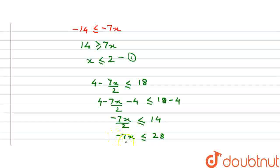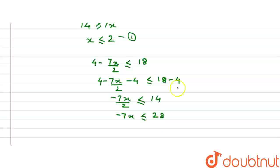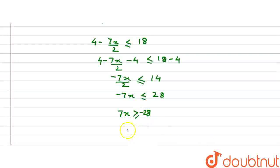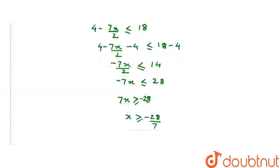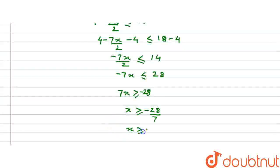Now we have a negative sign with the variable. To remove this negative sign we multiply the whole inequality by minus 1. As we already know, whenever we multiply an inequality by a negative integer, the inequality sign will change. So multiplying by minus 1, we get 7x greater than or equal to minus 28. Now dividing both sides by 7, x will be greater than or equal to minus 28 by 7, which gives x greater than or equal to minus 4.